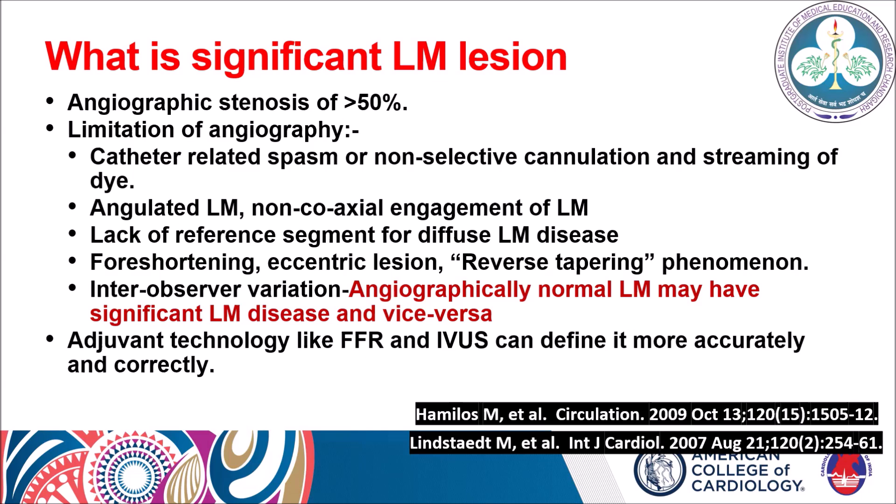There is also a lack of reference segment for diffuse left main disease; in that condition, a diffusely diseased left main can be labeled as normal. There can be foreshortening, eccentric lesion, and reverse tapering phenomena, which can overestimate the left main disease. There is also significant inter-observer variation. Angiographically, a normal left main may actually have significant disease and vice versa. Therefore, there is certainly a role for FFR and intravascular imaging to define left main disease more accurately and guide intervention.